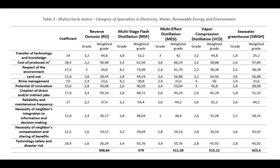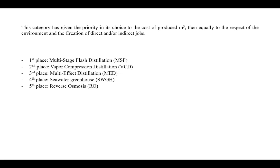The multi-criteria matrix relating to the category of specialists in electricity, water, renewable energy, and environment is presented in this table. This category has given priority in its choice to the cost of produced cubic meter, then equally to the respect of the environment and to the creation of direct and/or indirect jobs. Referring to the weighted final scores, this category has drawn the following ranking scenario of water desalination processes.